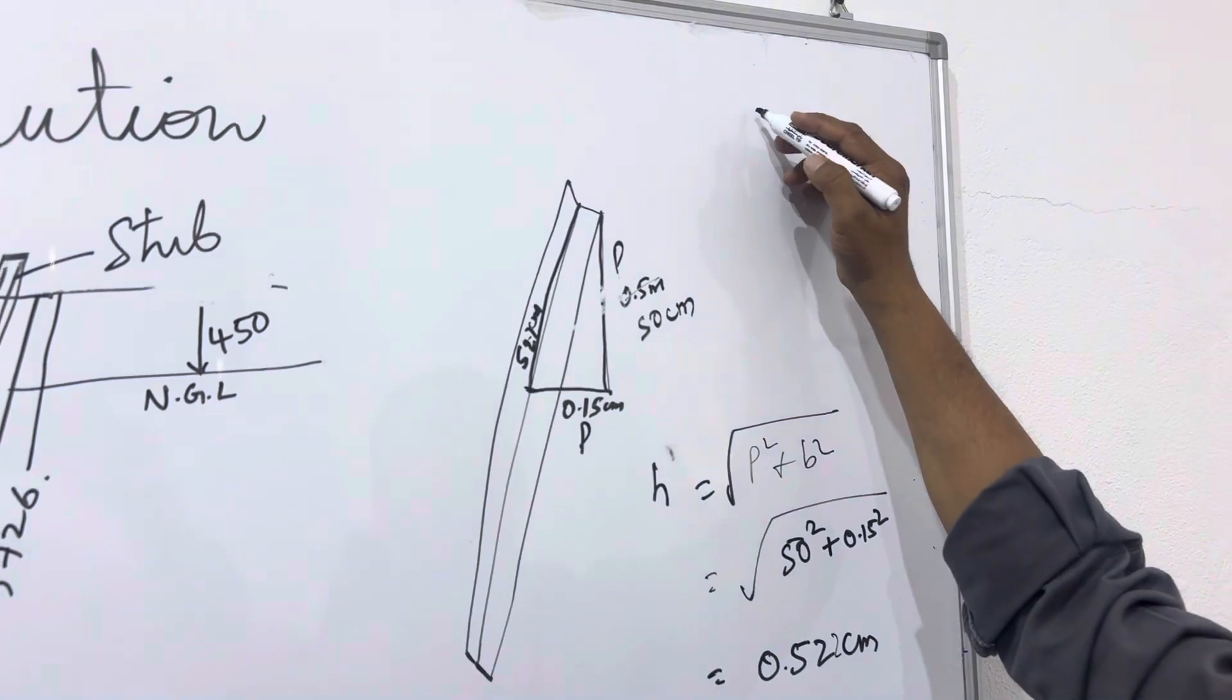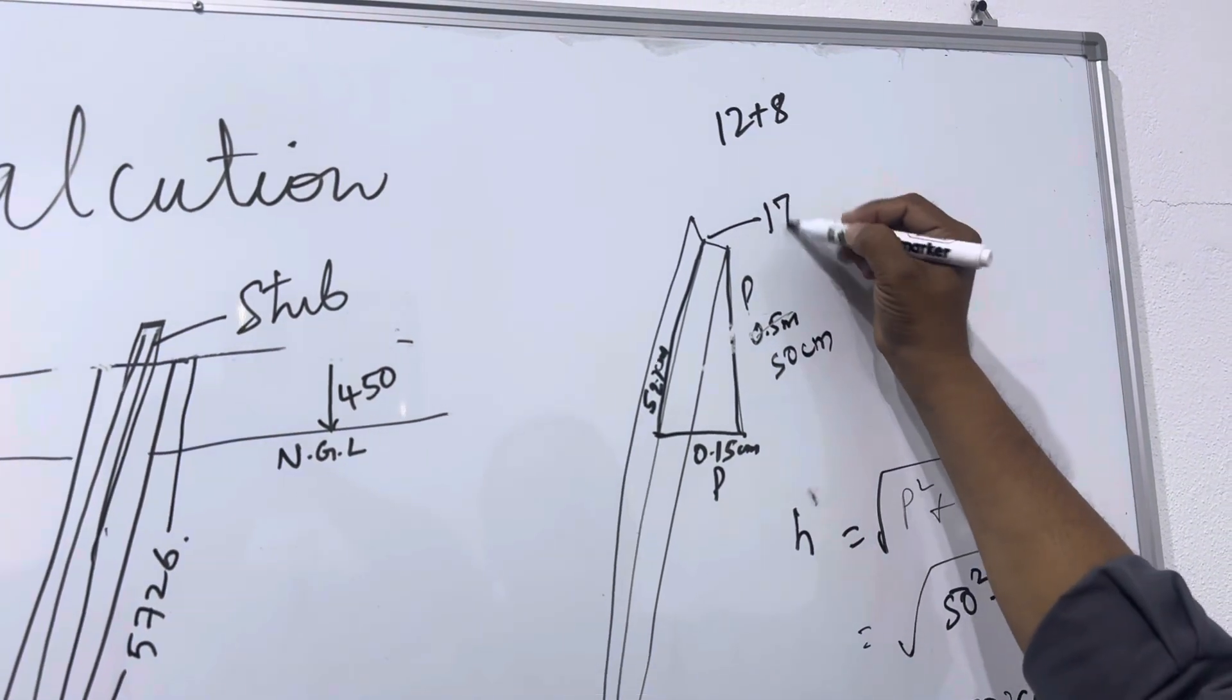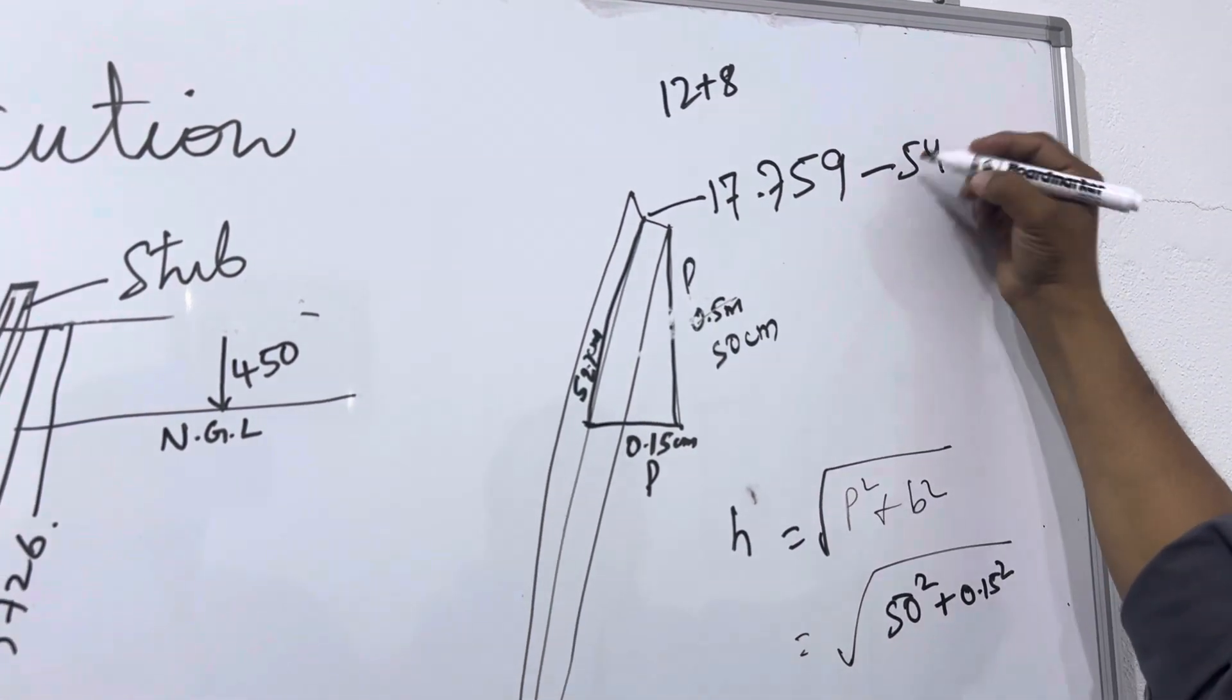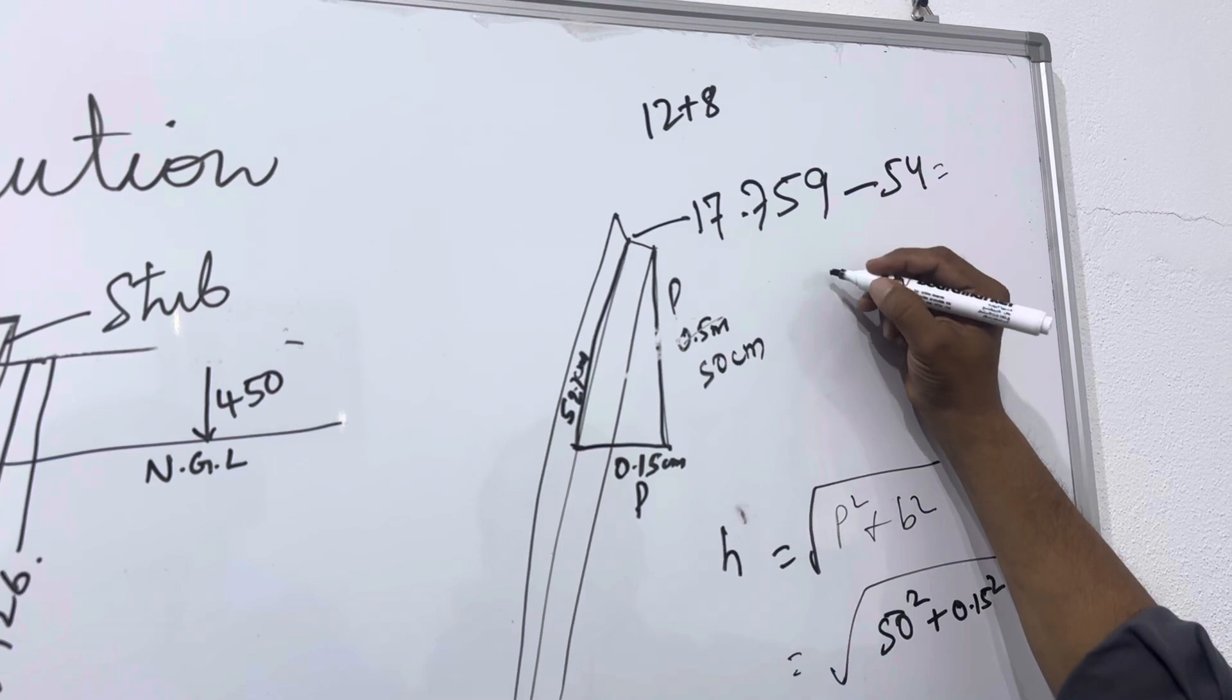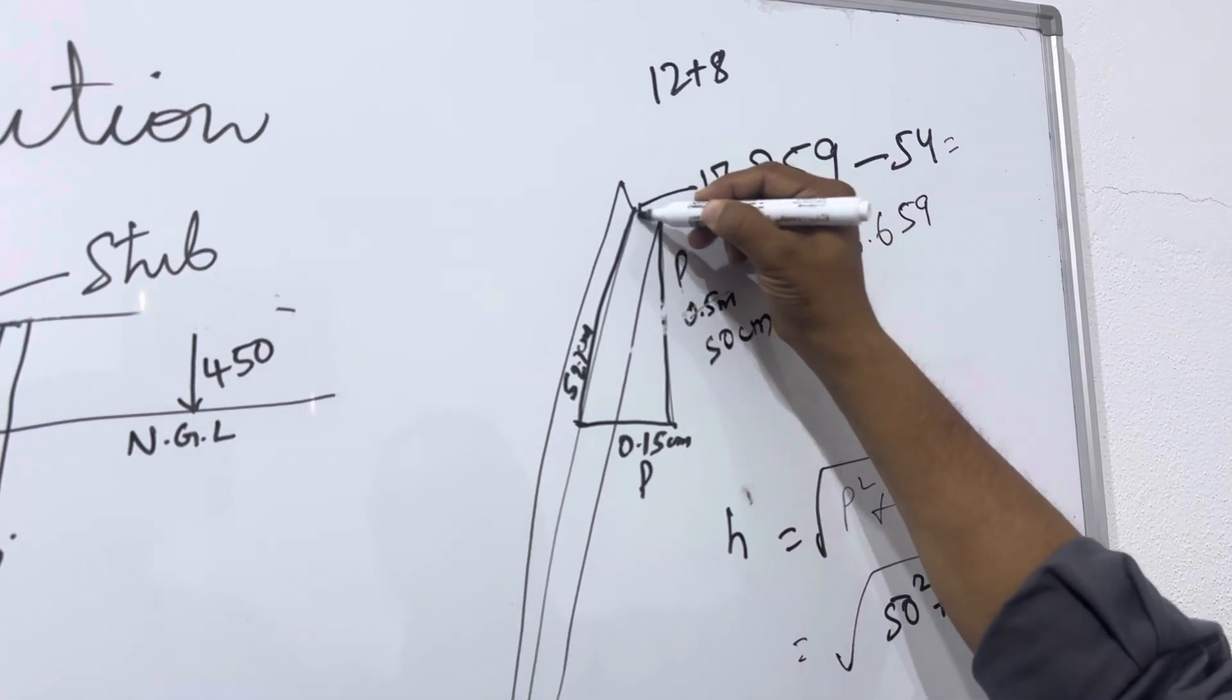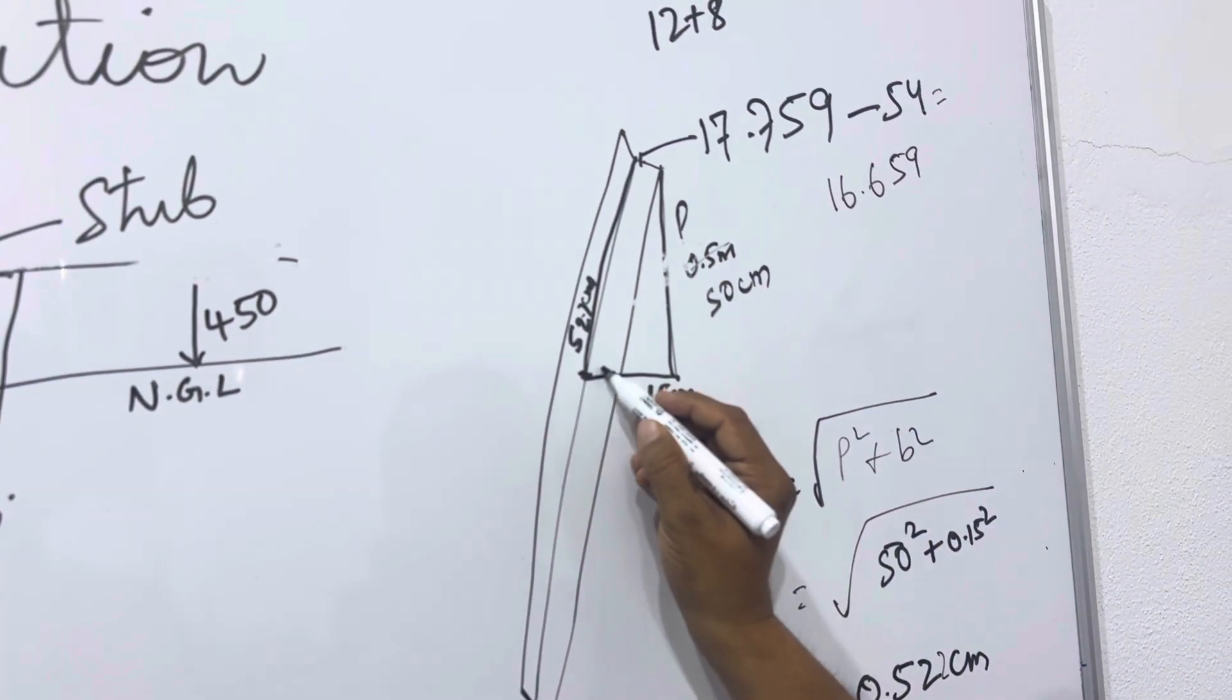And then first we will calculate the back to back, what is the measurement here. If we go for 12 plus 8 it will be 17.759, and if we reduce the thickness of the step 54 mm then it will become 16.659.